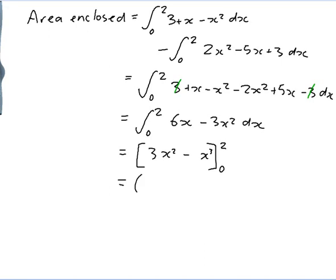And then I sub in the 0 and the 2 and subtract. So I have 3 times 2 squared minus 2 cubed minus 3 times 0 squared minus 0 cubed. Well these are both 0. And 3 times 2 squared is 3 times 4 which is 12. And 2 cubed is 8. So the answer is 4.